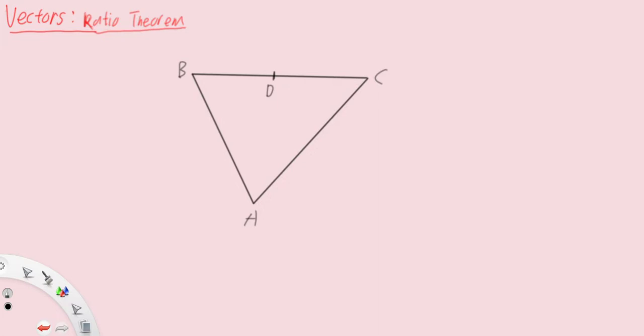If we were to have vector BC, then we know that vector BD is basically 2 over 5 of vector BC, and likewise vector DC would be 3 over 5 of vector BC.